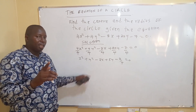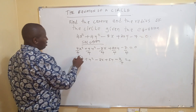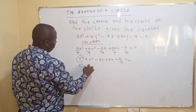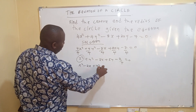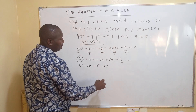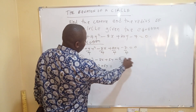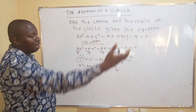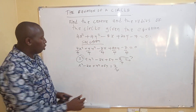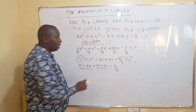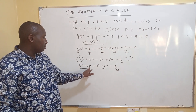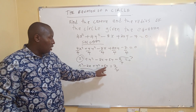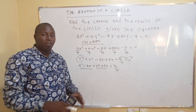Then bring the x and y terms together so you can complete the square: x squared minus 2x plus y squared plus 5y. Take the minus 7 over 4 to the other side, so it equals 7 over 4.